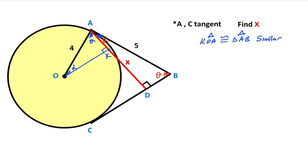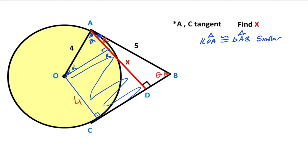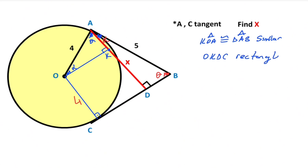Triangle KOA and triangle DAB are similar. Now draw one more perpendicular line from the center onto the tangent line. This length is also the radius, so here is four units. Focusing on this quadrilateral, we get a rectangle — OK, DC is a rectangle. So if here is four units, this length is also four, and x minus four is left here.